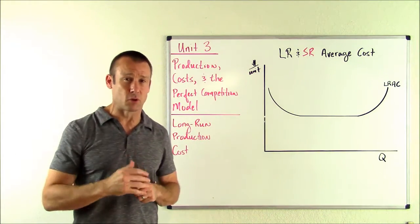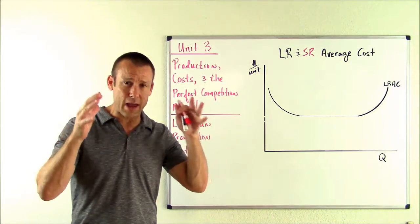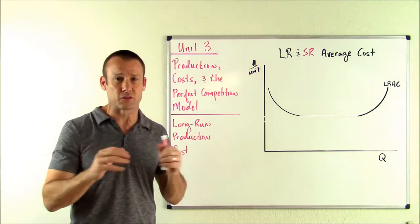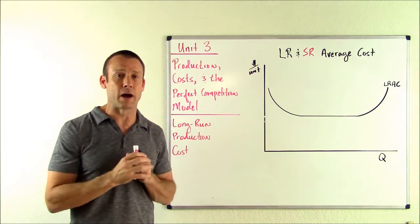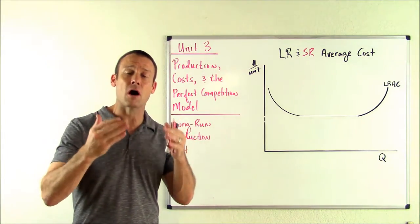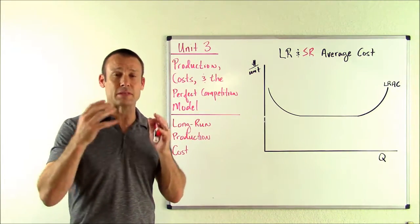that means everything is variable, including the facility you actually produce things in. Everything is variable. The plant size is variable. And so with that, we're going to talk about things like economies of scale and diseconomies of scale.